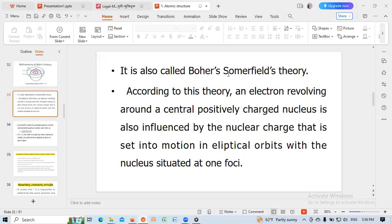It is also called Bohr-Sommerfeld's theory. According to this theory, an electron revolving around a central positively charged nucleus is also influenced by the nuclear charge that is set into motion in elliptical orbits with the nucleus situated at one foci.